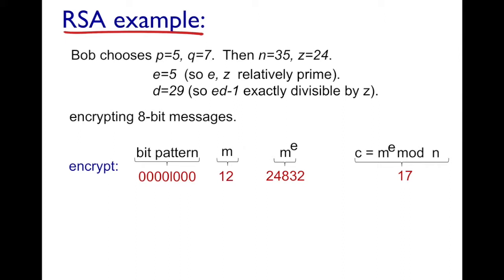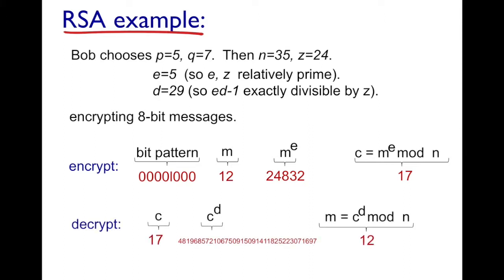Bob sends cipher text c = 17 to Alice. When Alice receives it, she raises 17 to the power of d = 29, producing a very large number. She then computes that large number mod n = 35, and she gets back 12 — the original message m. That is how RSA works.